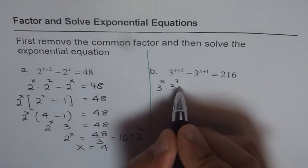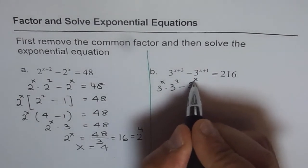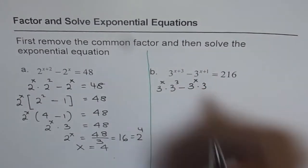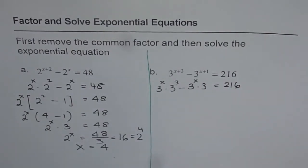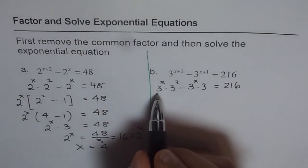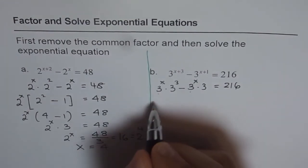Second term is 3 to the power of x times 3 to the power of 1, that means just 3, equals to 216. Now as you can see, 3 to the power of x is common, right? So let us factor this out.